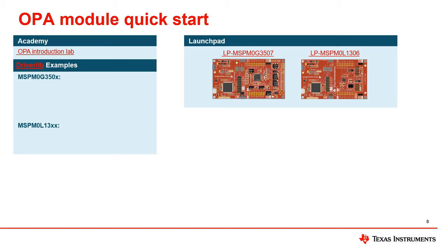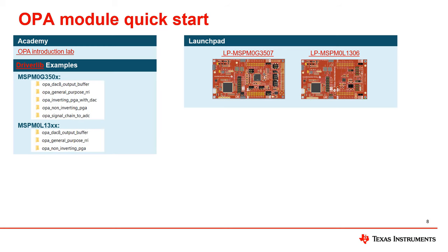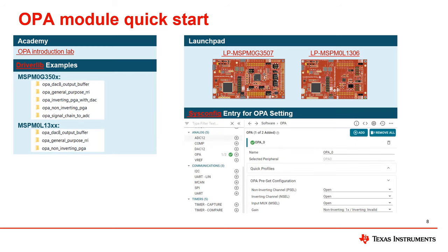The MSPM0G350X and MSPM0L13XX both have OPA peripherals, and there's a slight difference in the routines due to the additional 12-bit DAC on the MSPM0G. If you want to customize the configuration of the OPA module, it is recommended to use the SysConfig graphical configuration tool. Following the steps shown in the illustration, click and check the appropriate module, fill in the parameters, and then compile to generate code that contains the OPA configuration. This helps greatly reduce development time.